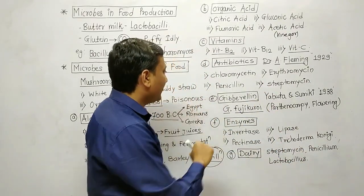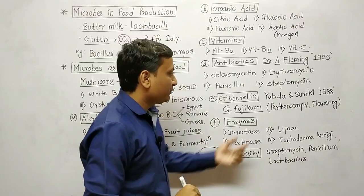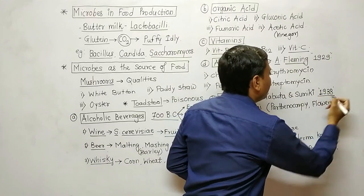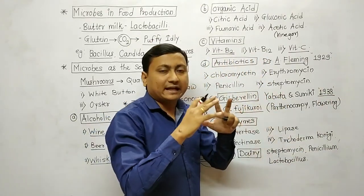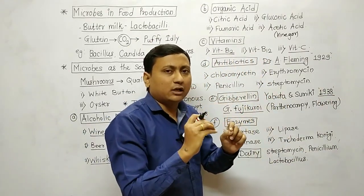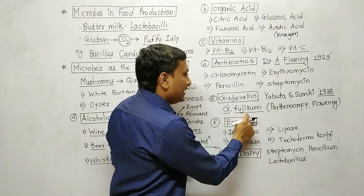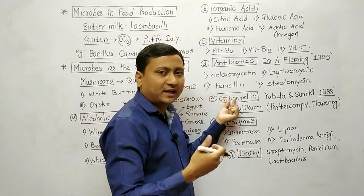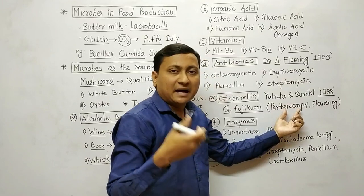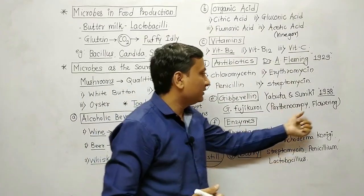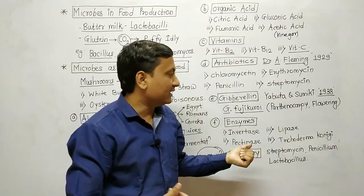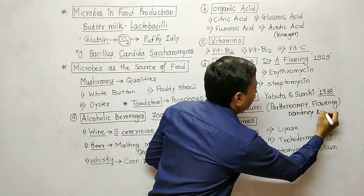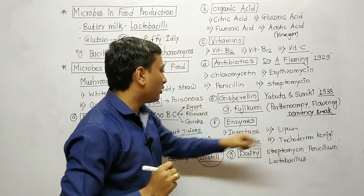Common names and biological names should be properly prepared. The next category is Gibberellin production. In 1938, it was discovered that a rice seedling had a fungal infection. That fungus led to the discovery of Gibberellins. Gibberellin generally induces parthenocarpy, causes early flowering, and breaks the dormancy period.